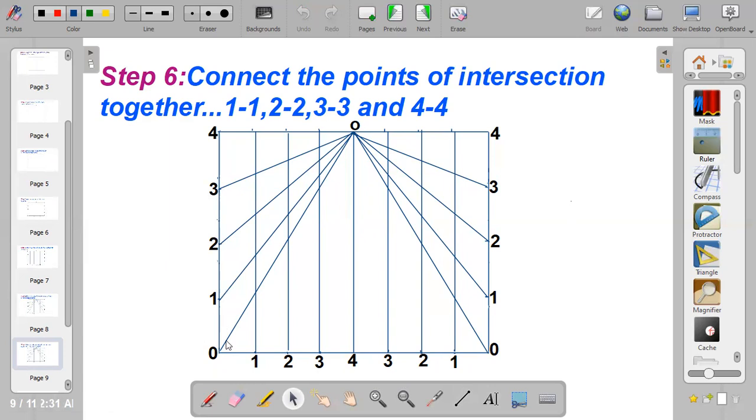So start tracing from one, take it up. When you get to the point where they intersect, place an asterisk. You go to two, division two, you take it up to intersect with two, place an asterisk. Trace division three, take it up, asterisk. This is point O, place an asterisk.